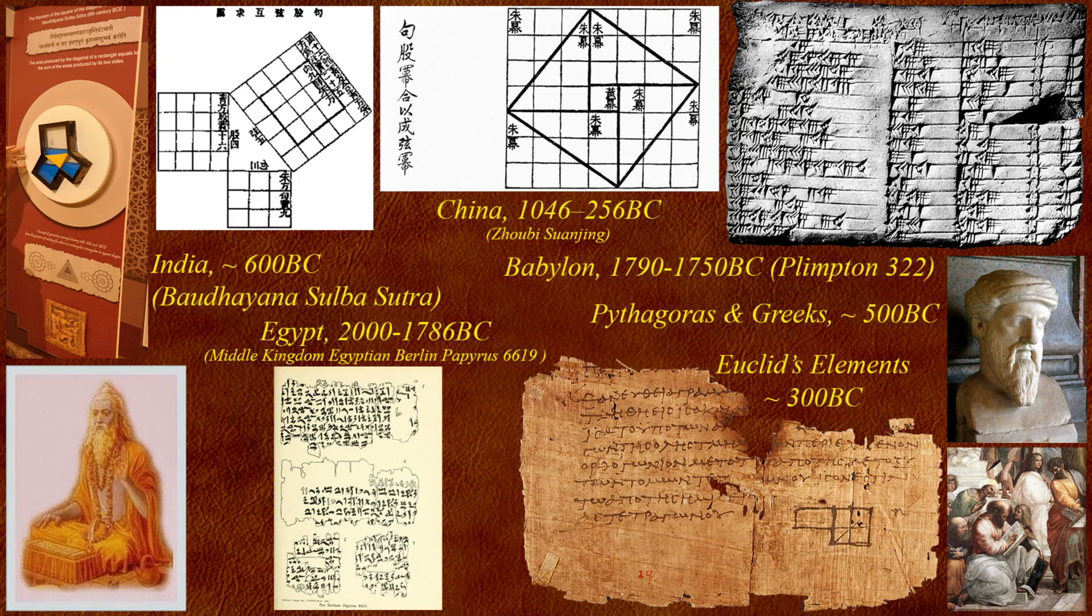It also often happens that the naming of and credit for discoveries and inventions are linked to a specific person, although other people may have made the same discoveries and even earlier. The theory of Pythagoras is such a case. There are writings as old as 4000 years, more than a thousand years before Pythagoras was born, that illustrate and prove aspects of the theory from places like Egypt, Mesopotamia, India and China.